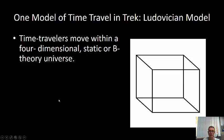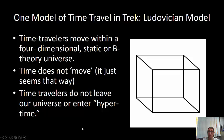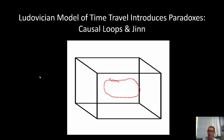These time travelers move within a four-dimensional static, or B-theory, universe. In this universe, time does not move — it just seems like it moves to us, so the feeling that time is moving forward is just subjective. In this model, time travelers do not leave our four-dimensional space-time block. There are other models where a time traveler would skip to another universe or enter a hypertime, but this model introduces the troubling idea of causal loops or GIN.